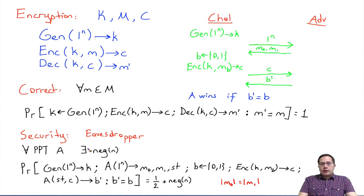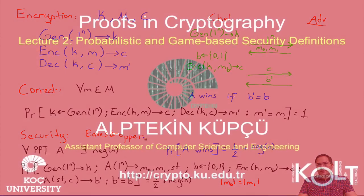Now if I want to redefine this whole probability, I can say for all PPT adversaries, there exists a negligible function on n, such that probability that the adversary wins the game that we defined here needs to be equal to 1 over 2 plus negligible. If that's the case, then our encryption scheme is secure against an eavesdropper.